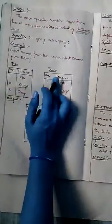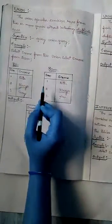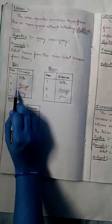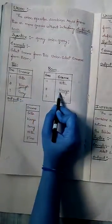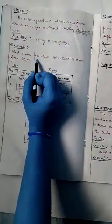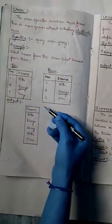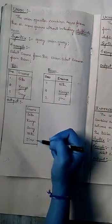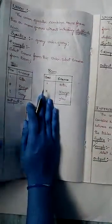In order to understand the concept of the union operator, we have two tables here: the BAC table and the BCOM table. If we observe these two tables carefully, we notice a duplicate row in both the tables. Coming to the example: select student name from BAC union select student name from BCOM. In the output of this query, we do not find any duplicate rows.